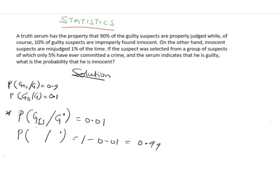For the third part, the suspect was selected from a group where only 5% have committed a crime, so the probability of being guilty is 0.05. The probability of being innocent from this group is 1 minus 0.05, which is 95%, or 0.95.